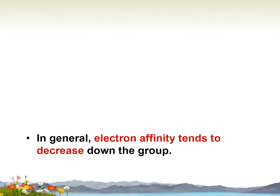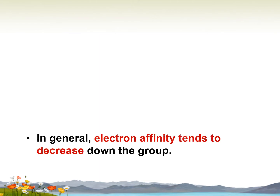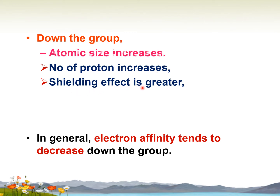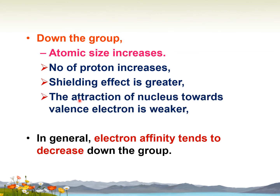What about EA when going down the group? In general, the electron affinity tends to decrease down the group. Down the group, the number of protons increases, the shielding effect is greater, and atomic size increases, making the attraction of the nucleus towards a valence electron weaker — thus EA decreases.